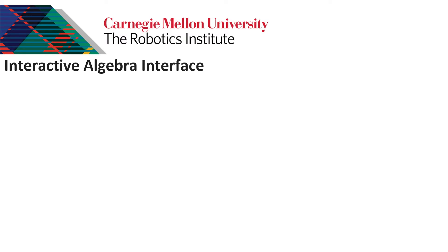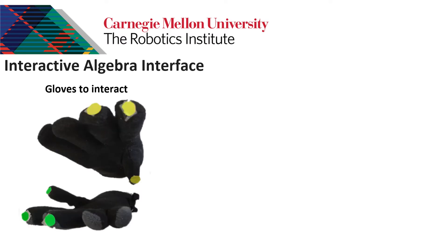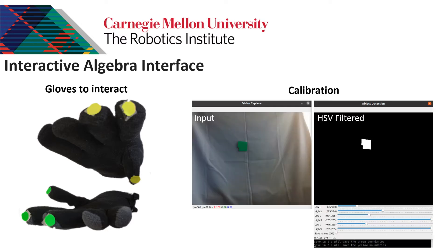Now let's talk about the interactive algebra interface. We propose a pair of gloves to interact with the interface. These do not necessarily have to be this color, since there is also a calibration stage where you can use the color of the glove you select to define the hue, saturation, and value boundaries that are going to be used during the simulation to filter hand fingertips.